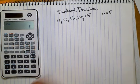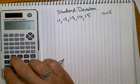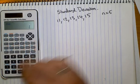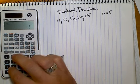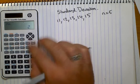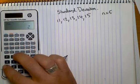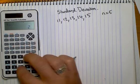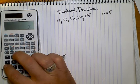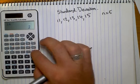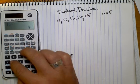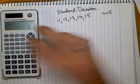So continue on. 12 is our next one. Don't have to press equals or anything else like that. So 12, M+, N equals 2. Then 13, M+. Then 14, M+. Then 15, M+. N equals 5.